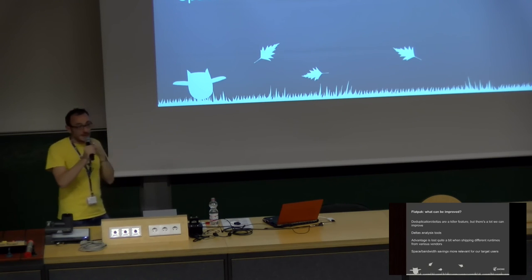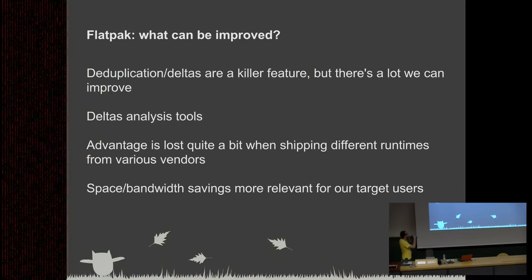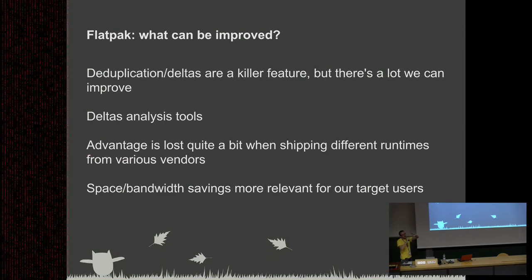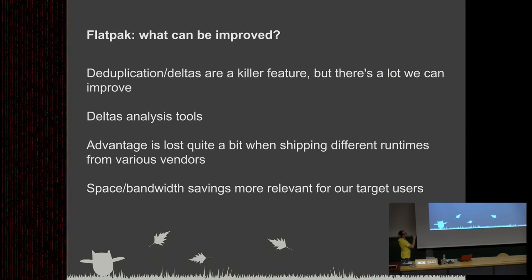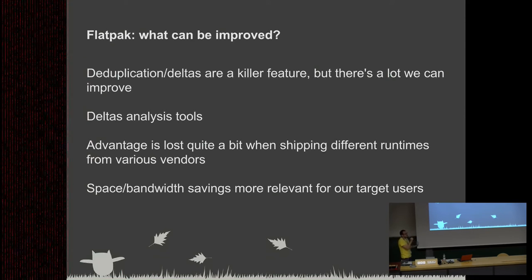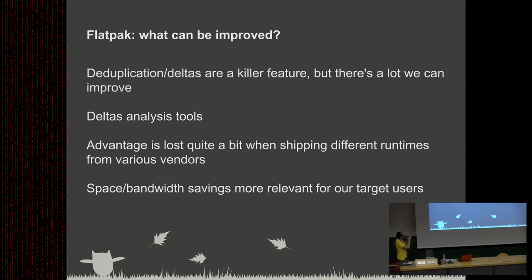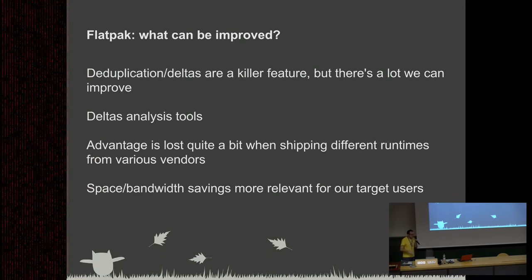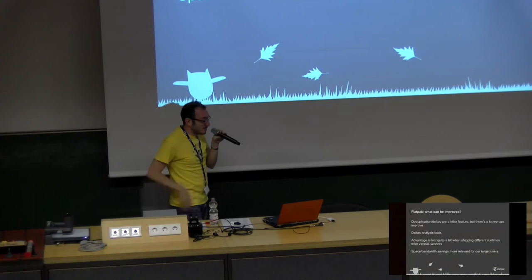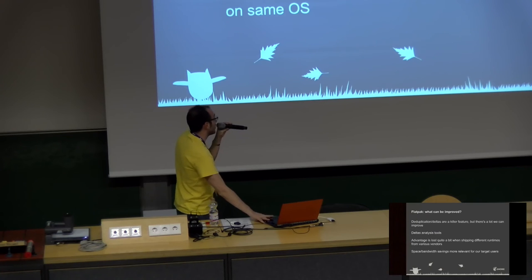Deltas are really nice — a native feature of OSTree that Flatpak uses. When you go between two versions, you don't download the whole new application again; you just download the differences and apply them. It would be nice to have some analysis tools for deltas, perhaps something you can see on the server side showing what the delta was when generated. This is an evolving feature we can work on. The space savings and bandwidth savings of deltas are really relevant for us.